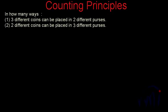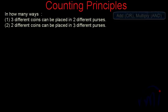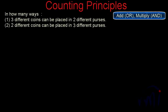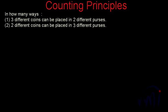Here we are going to take one solid example based on the counting principle. We are going to use the rules of AND and OR. This problem is divided into two parts. The first part asks: in how many ways can three different coins be placed in two different purses? The second part asks: in how many ways can two different coins be placed in three different purses? We will solve the first problem first.